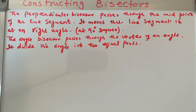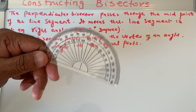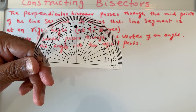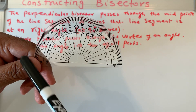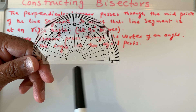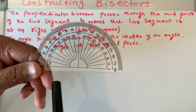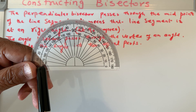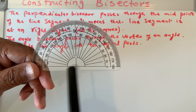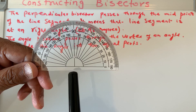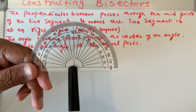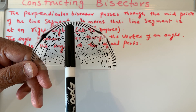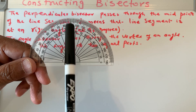First of all, I will introduce this — this is called a protractor, simply a D-shaped thing. With the help of the protractor, you can measure or make any angle. You can see in the middle is the zero point, and if you go vertically up, it's a right angle or 90 degrees.